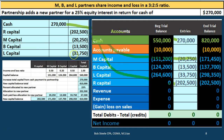B's capital account has a credit balance of $124,200; adding a credit of $13,500 increases it to $137,700. L's capital account balance increases by $33,750 from $264,600 to $298,350. The assets — cash — minus the liabilities — accounts payable — will equal the new capital account balances, which add up to $810,000.